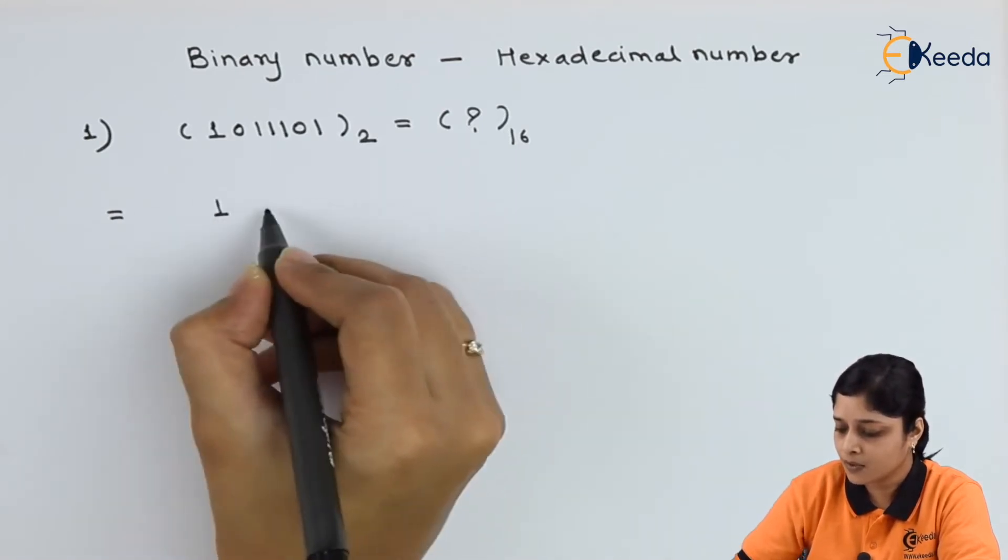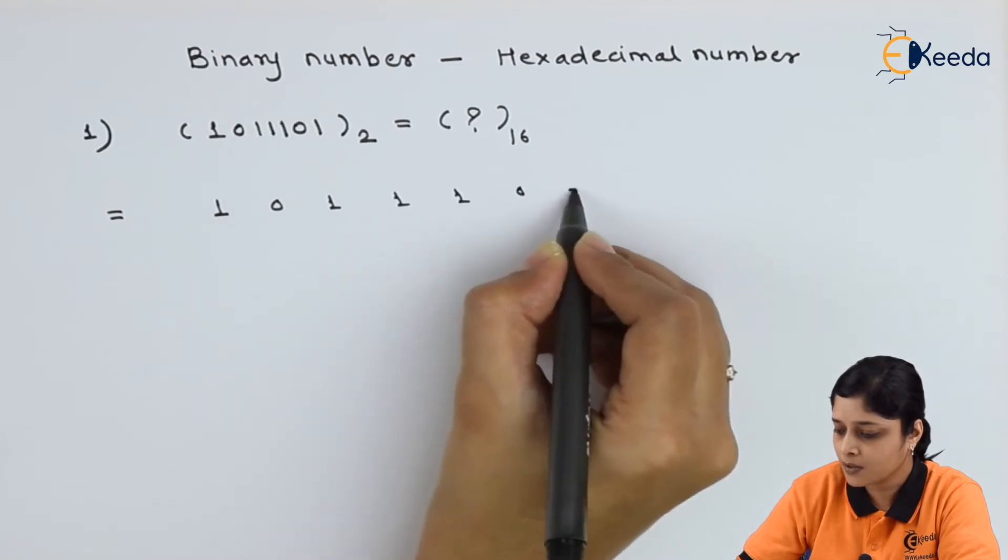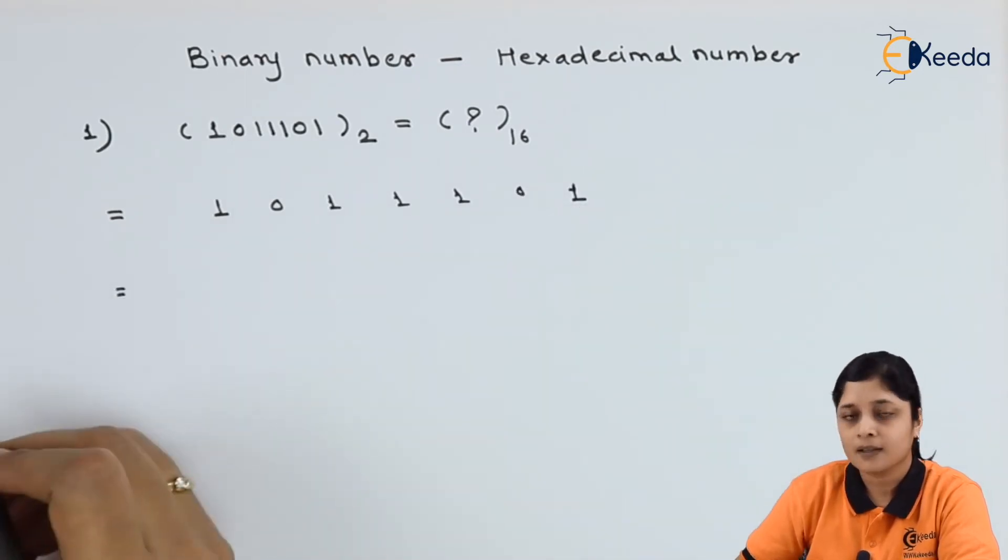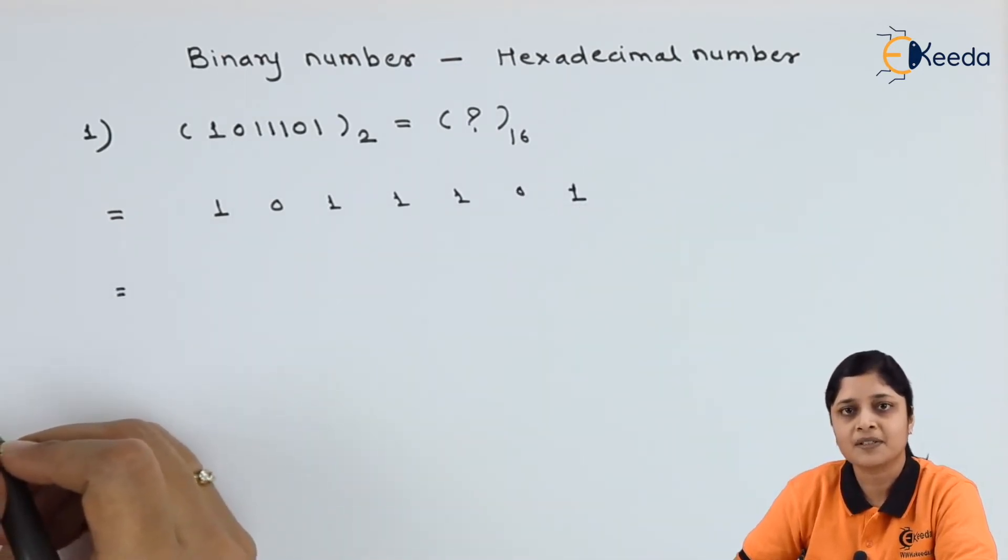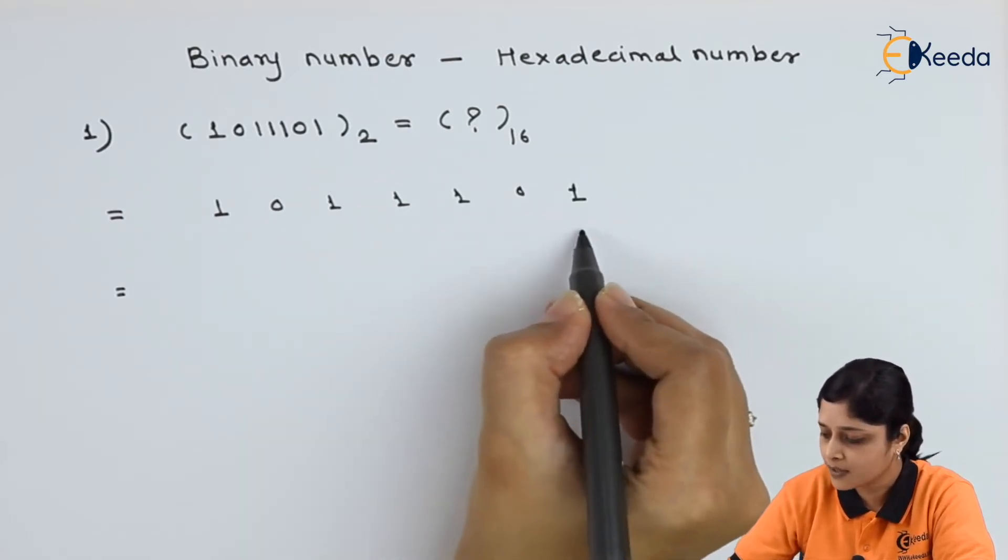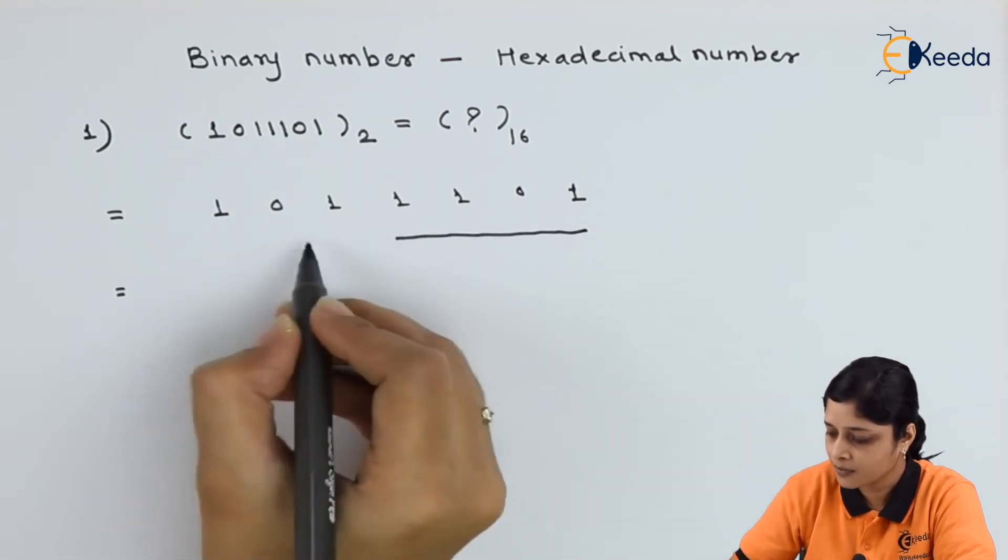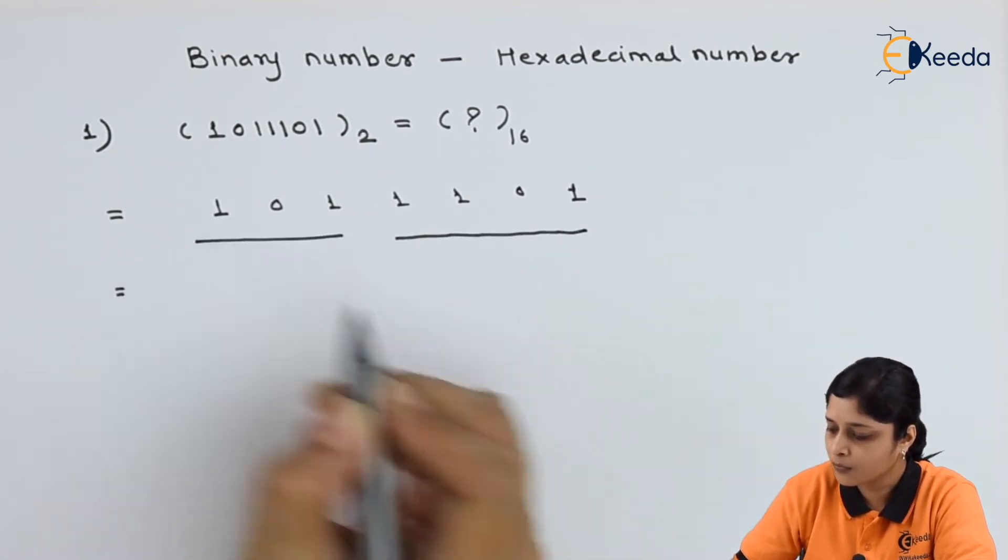Again write down given binary number with space. Now in hexadecimal number system, you have to make a group of 4. Starts from this side. Go towards left.